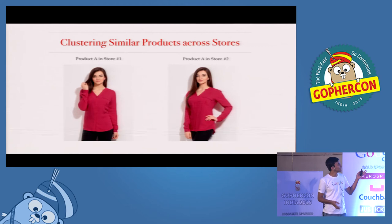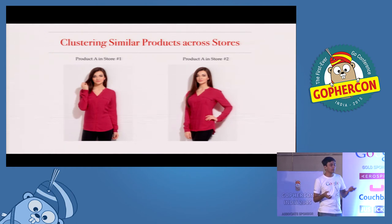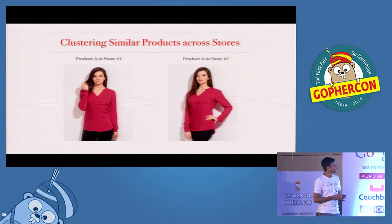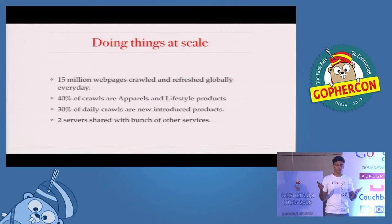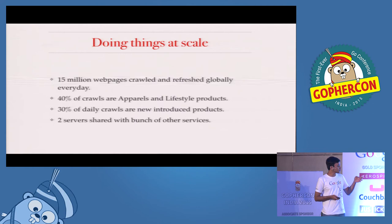Another use case is clustering similar products. We have a product on one website and another product on another website — how do you know both are similar? We have a clustering engine, and whatever color histogram we get from an image, we plug it directly into the clustering engine, and it tells us what are the similar images across different stores. We crawl around 15 million web pages every day. Almost 40% of those products are apparels and lifestyle products, and 30% are newly introduced products, meaning we have around 2 million images to process every day.